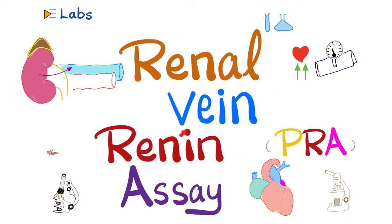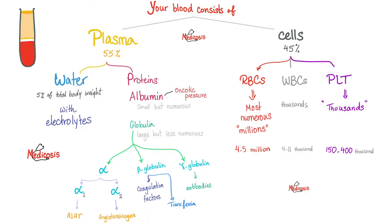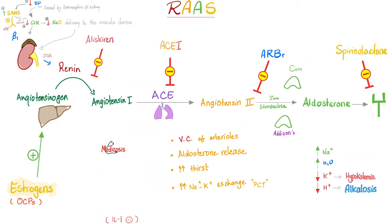Remember that renin comes from the kidney. We can consider it as both an enzyme and a hormone. Renin converts angiotensinogen into angiotensin 1. Angiotensinogen is a globulin — a plasma protein made by the liver. The main function of renin in life is to raise blood pressure, which means the most common trigger of renin release is low blood pressure.